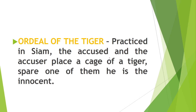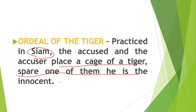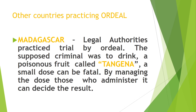The ordeal of the tiger was practiced in Siam. The accused and the accuser were placed in a cage with a tiger — whoever was spared by the tiger was considered innocent, and whoever was mauled was judged guilty. This was based on a biblical reference: if the tiger did not maul you, you were considered not a sinner; if you were mauled, that mauling was itself your punishment.